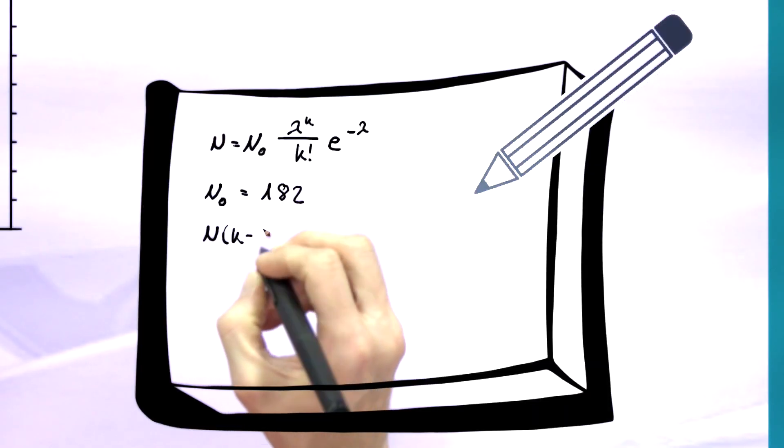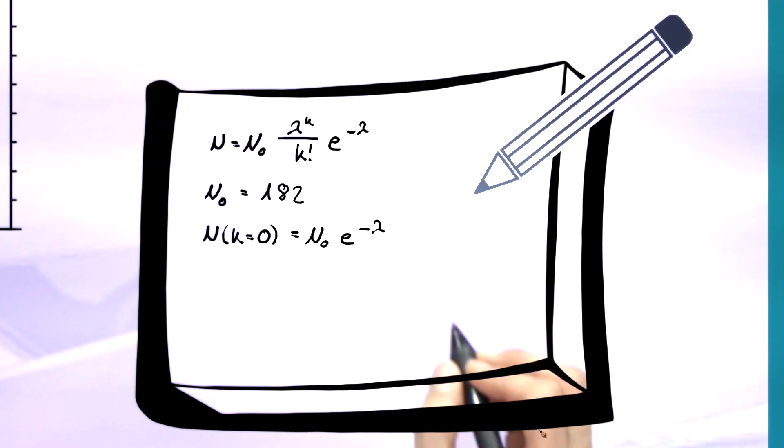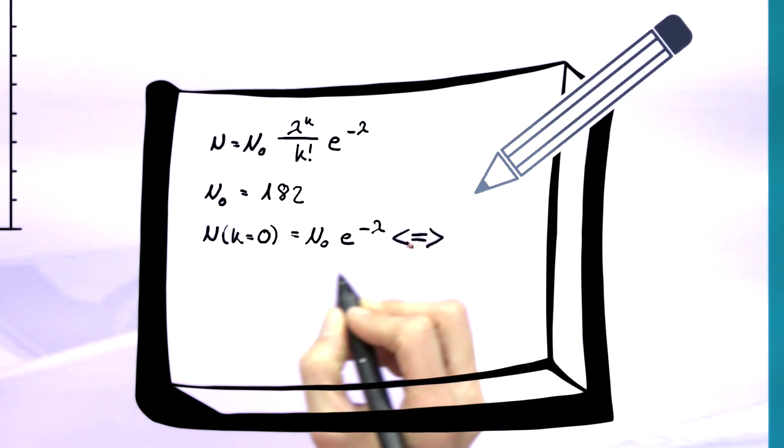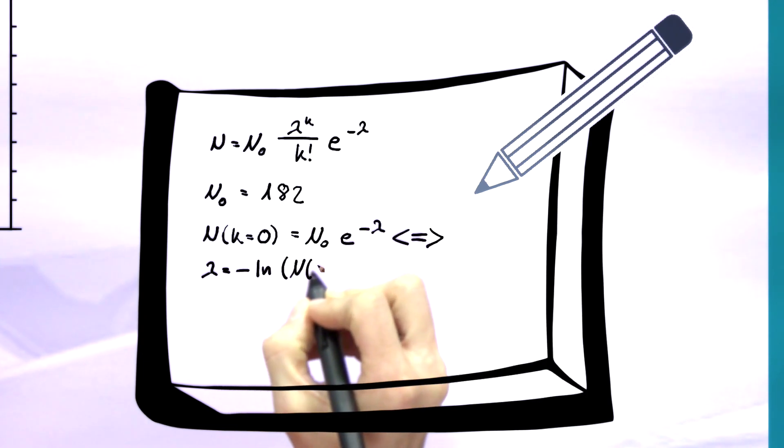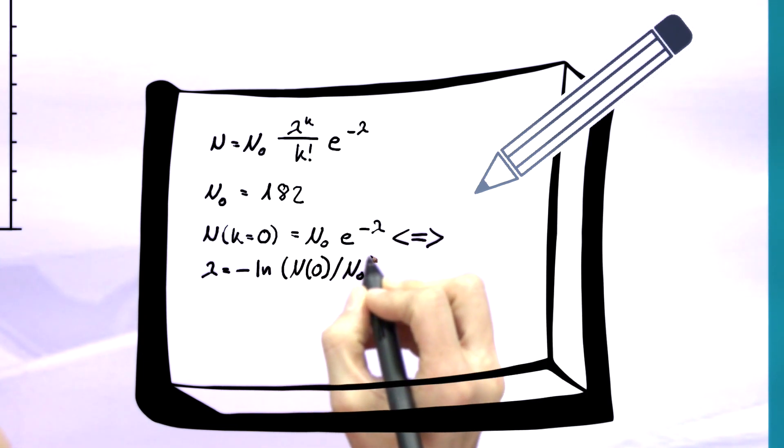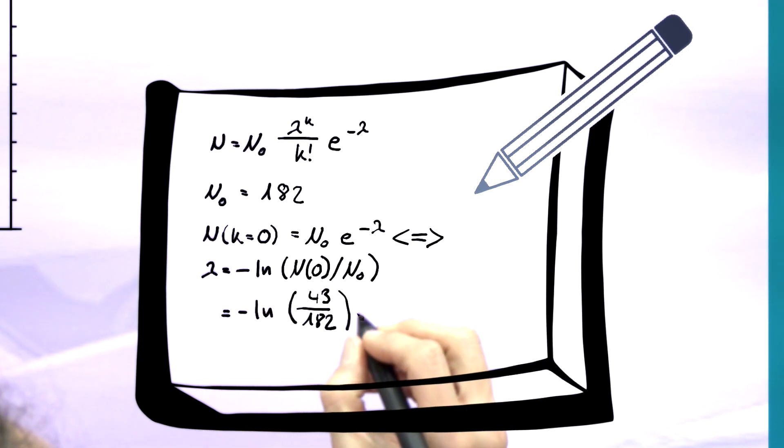Lambda is easy to calculate. For the first bar, k equals 0. Hence, the following applies: n of k equals 0 equals n0 times e to the power of negative lambda. If we solve for lambda, we get lambda equals minus the natural logarithm of n of 0 divided by n0 equals negative ln of 43 divided by 182 equals 1.44.